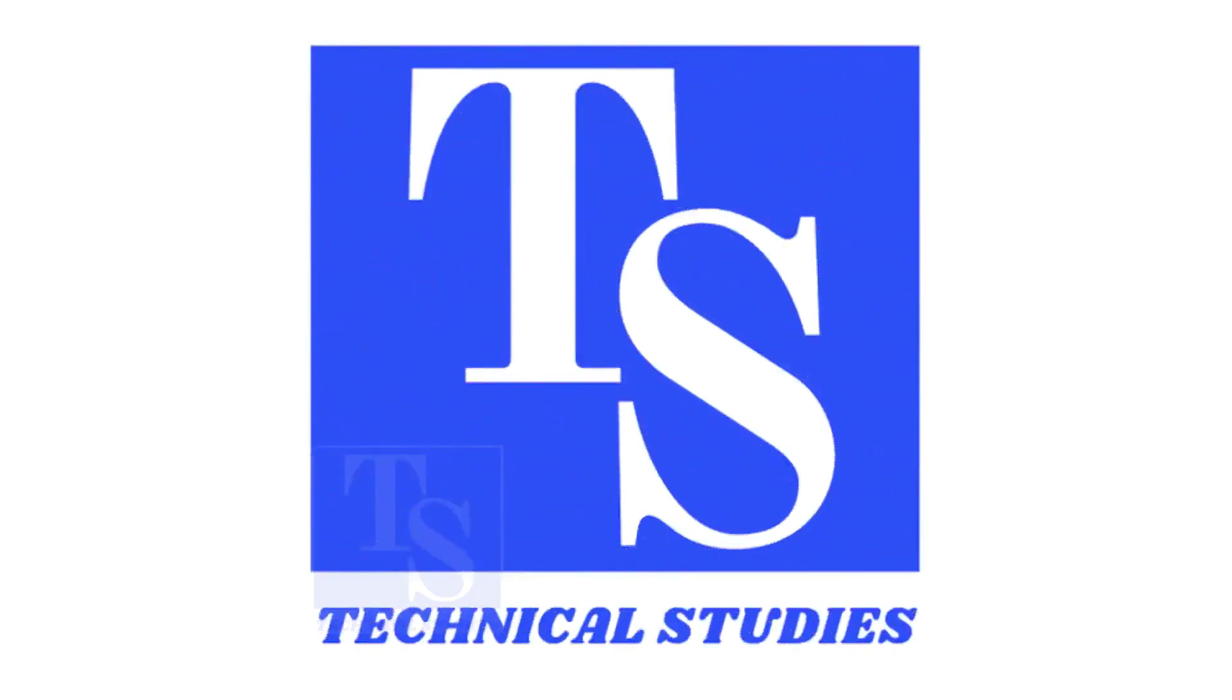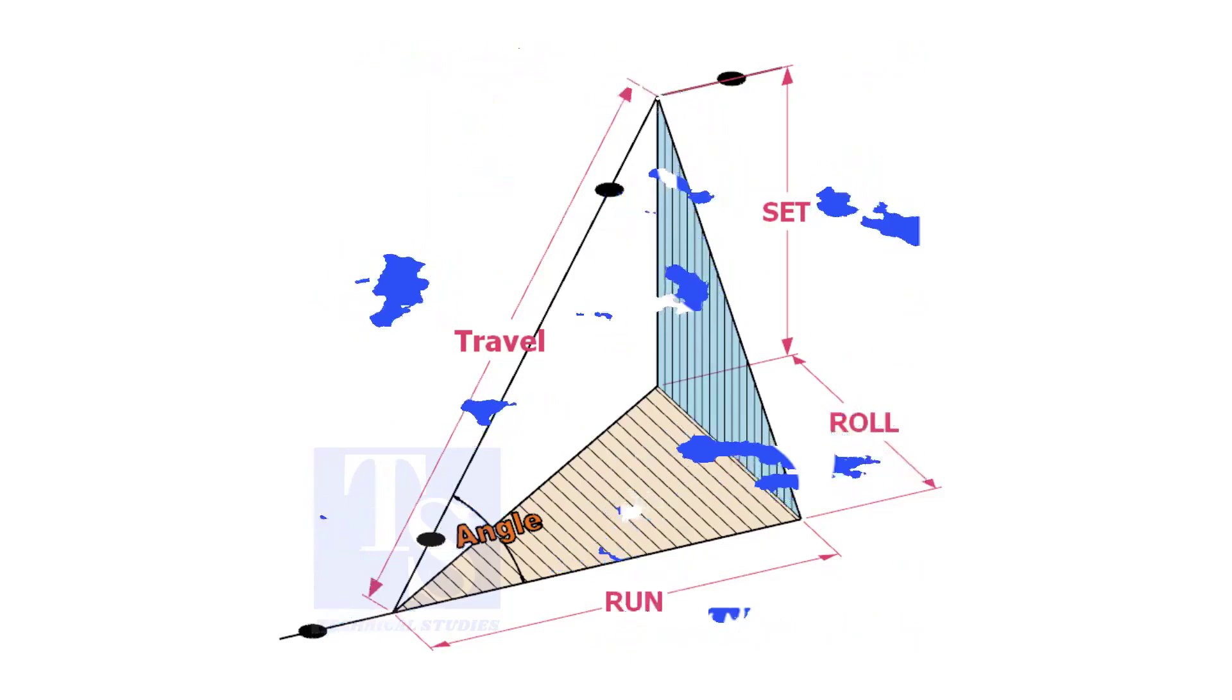Welcome to Technical Studies. In a piping drawing of a double rolled offset, usually the dimensions of the run, set and roll are given.